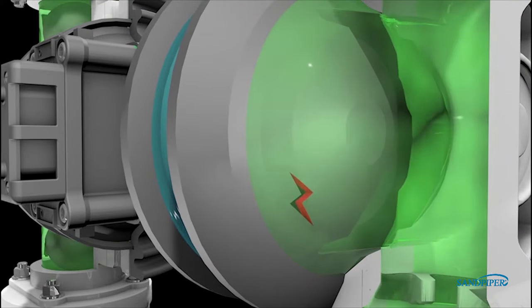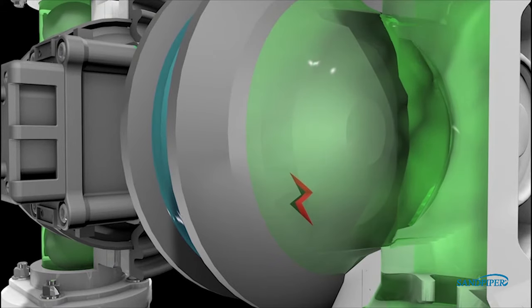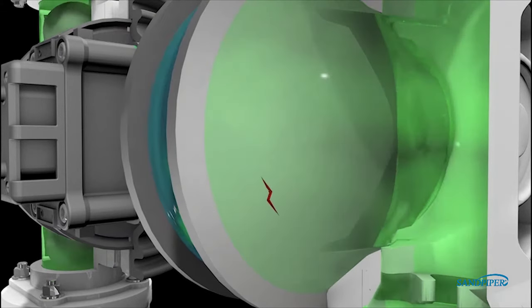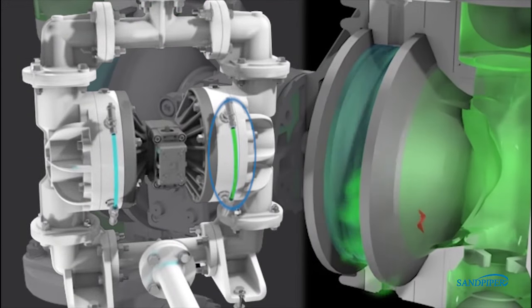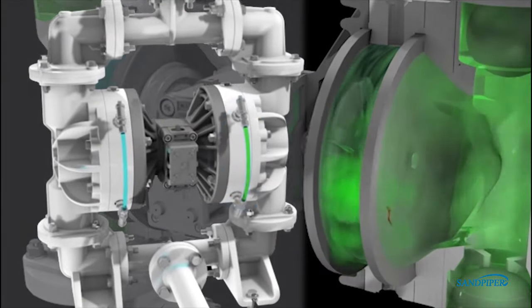In the event of a pumping diaphragm failure, the process fluid will enter the containment chamber causing the fluid to change color. This will alert the operator that the pumping diaphragm has failed and that maintenance is required on the pump.